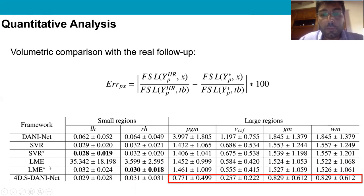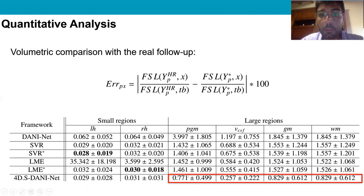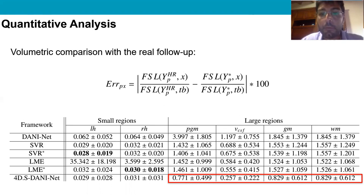The worst-performing method is the baseline approach. The best-performing methods depend on brain region size. For small regions, SVR* and LME* slightly outperform our solution. For large regions, our approach has the highest accuracy by a considerable margin. A possible interpretation is that disease mechanisms on small regions follow linear models, and therefore regressor-based approaches can already provide good results. For large regions, a complex deep neural network like 4D-DANINET achieves much better performance.